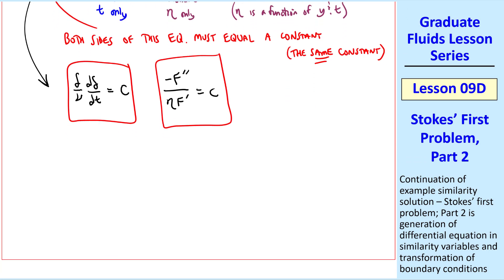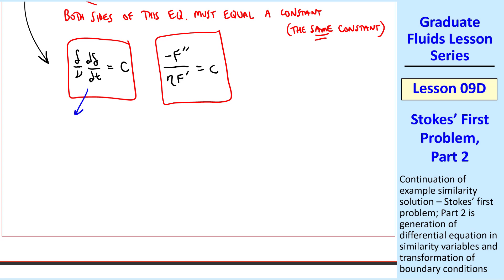Now we need to solve both of these equations. Let's work on this left one first. We separate variables to get δ dδ = cν dt, which we can easily integrate.